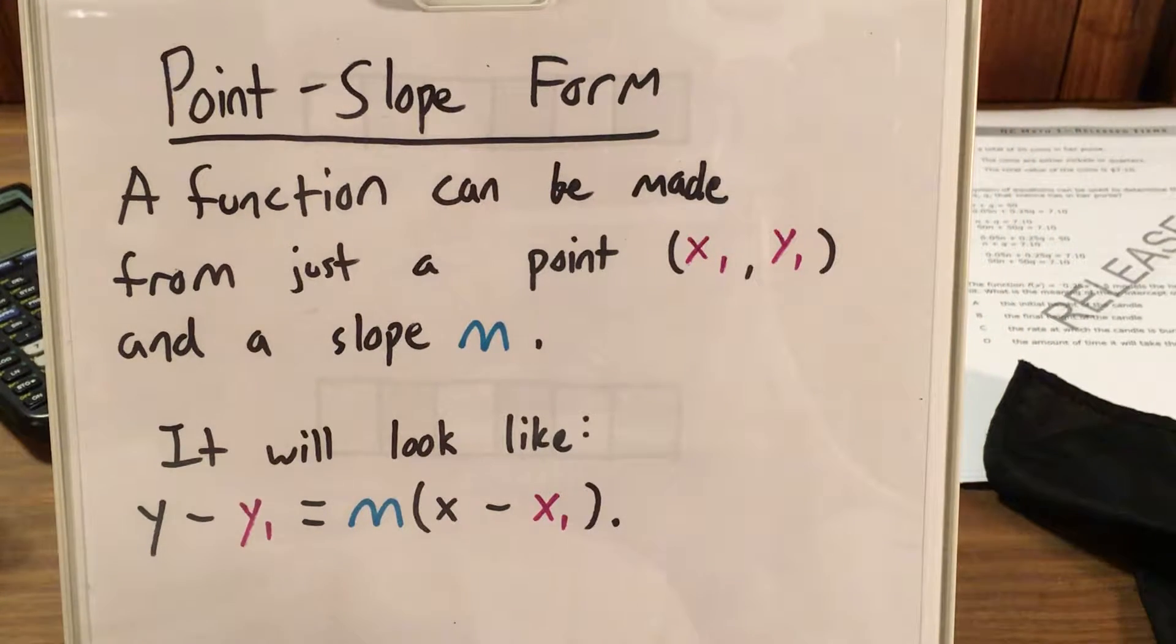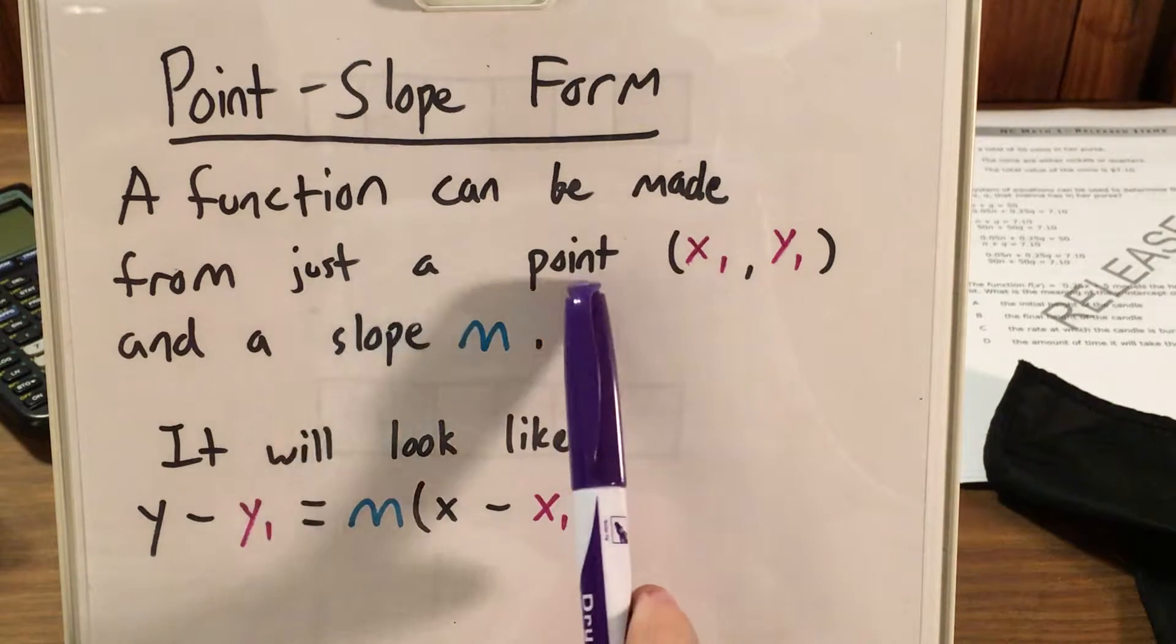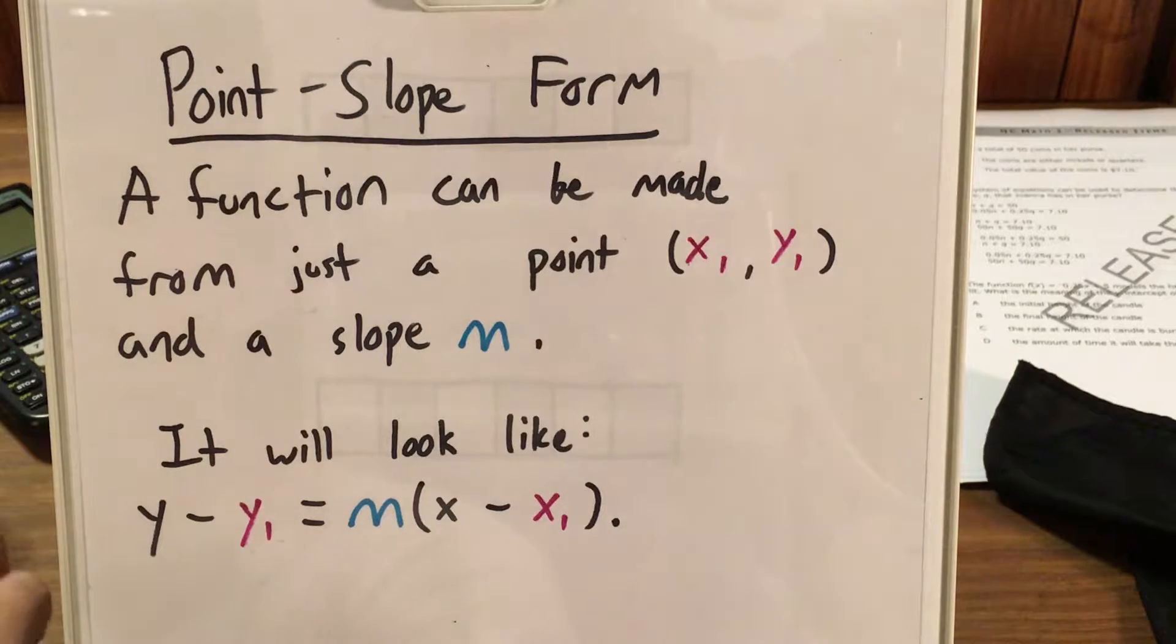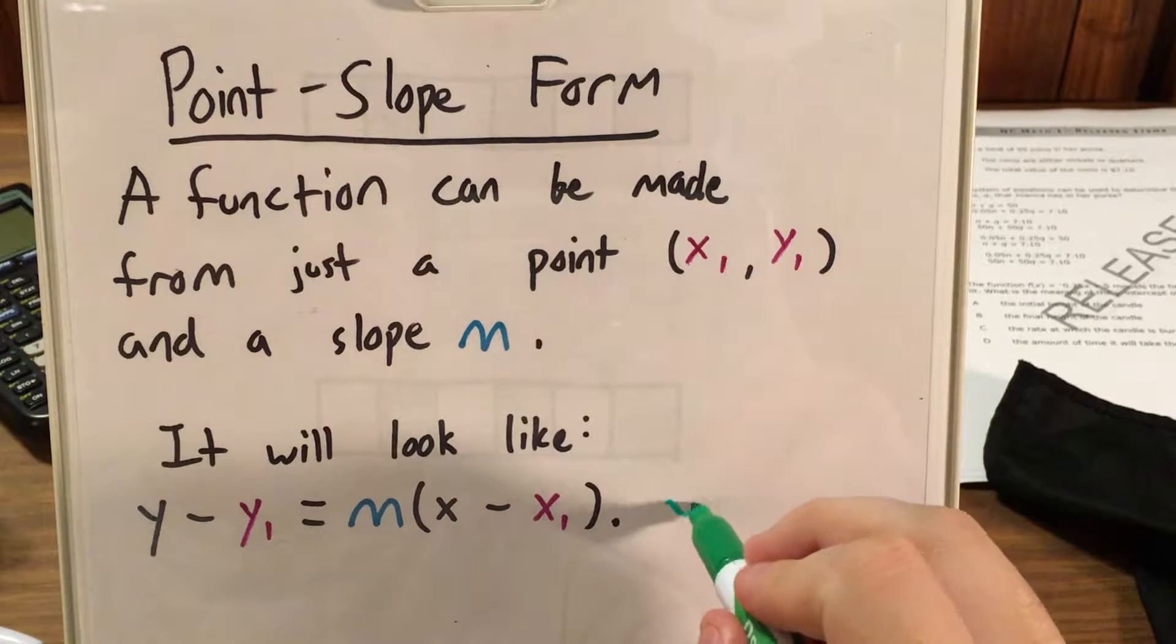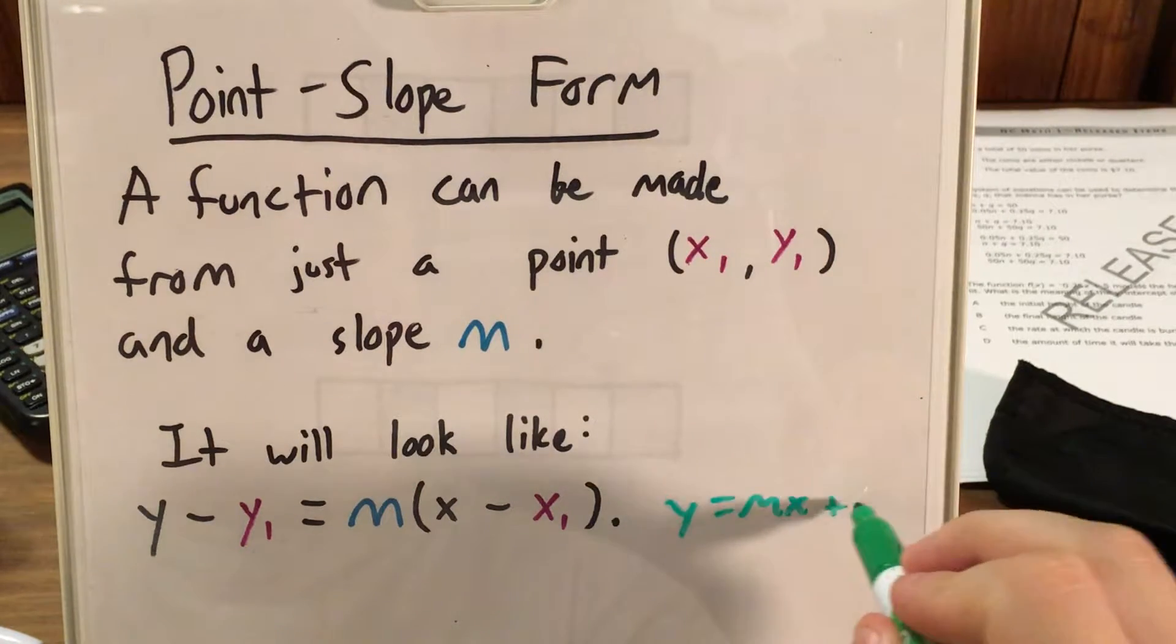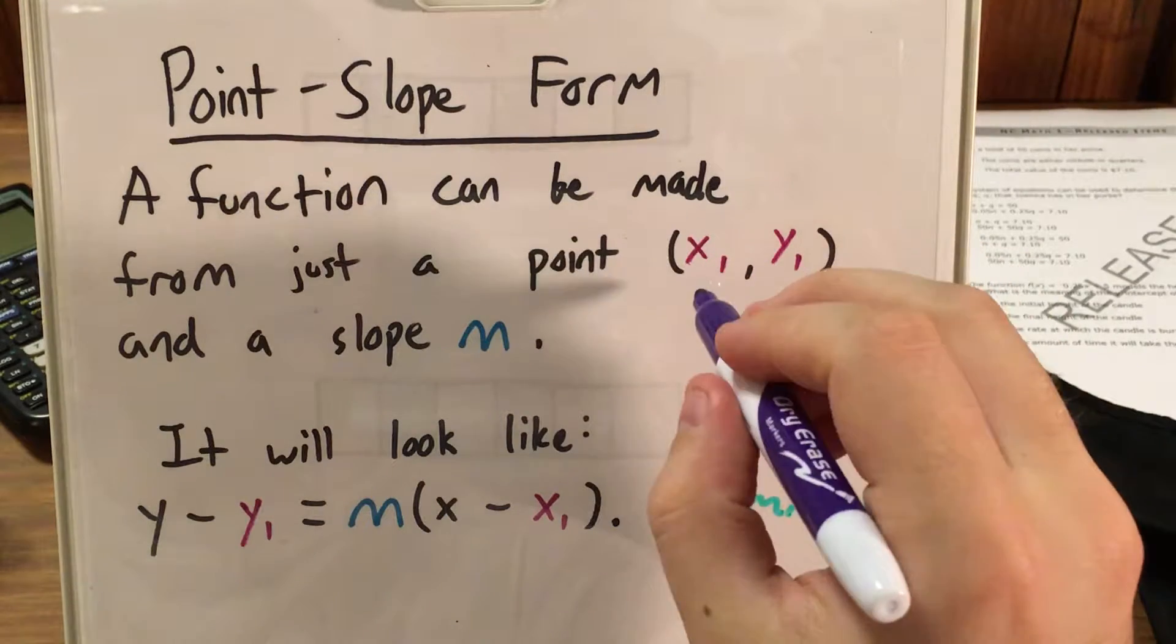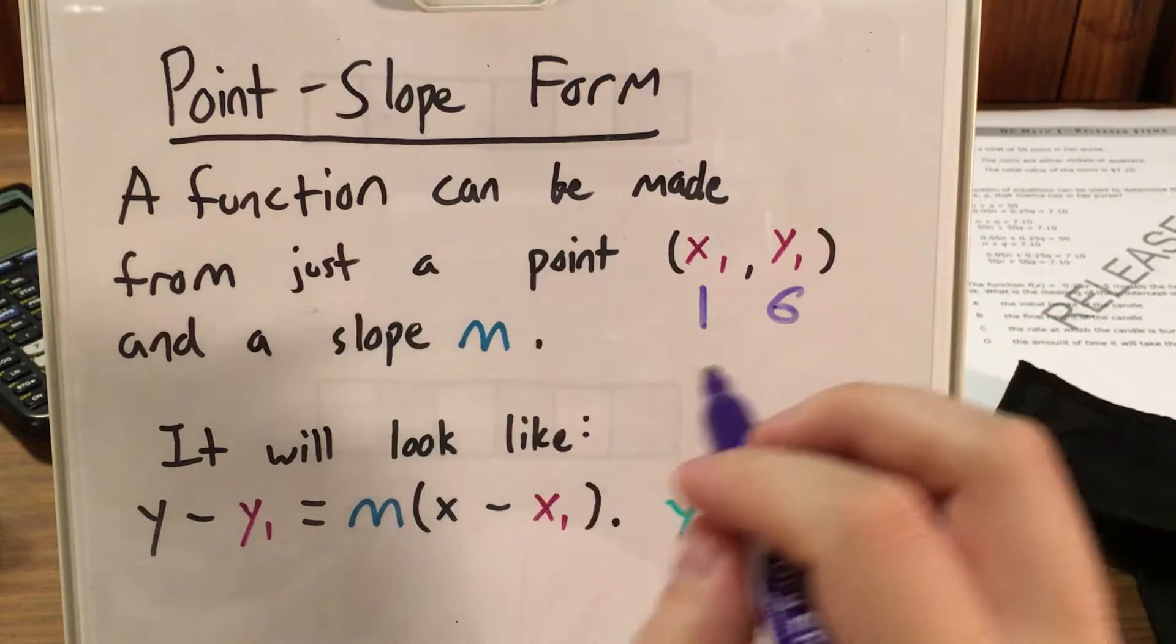Okay, so here's the idea of point-slope form. If all I have is a point and a slope, then I can actually plug that information into this function, and we're going to have to do a little bit of mathematical tweaking to get it to look like something like this. But for now, I'm just going to look back at the problem, and I'm going to remember that my point that my line was going to go through had an x of 1 and a y of 6.